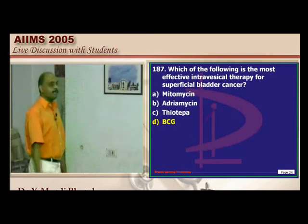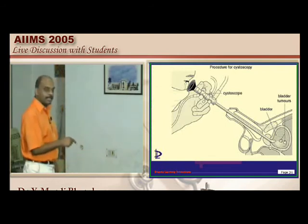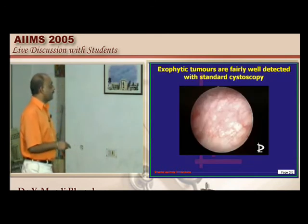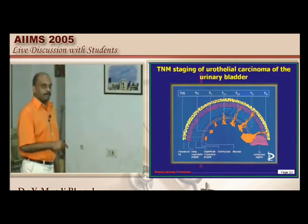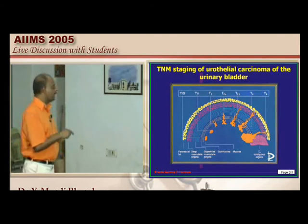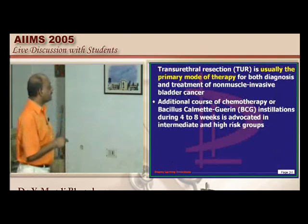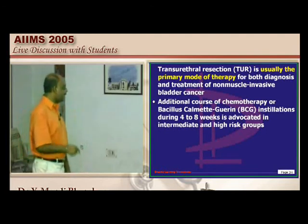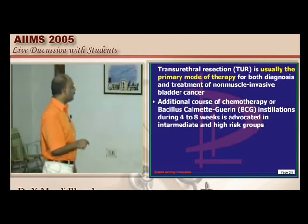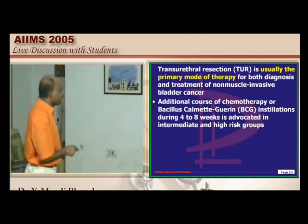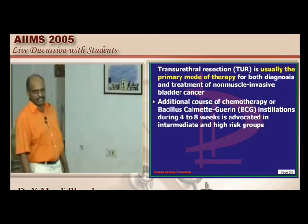Intravesical therapy is given via cystoscopy, instilling chemotherapeutic agents into bladder tumors. On cystoscopy, bladder carcinoma has an exophytic appearance. Like breast carcinoma, bladder carcinoma is staged by TNM classification. Transurethral resection is the primary therapy until the detrusor muscle is not invaded. BCG instillation and chemotherapy are additional management modalities — BCG is the answer for intravesical therapy.